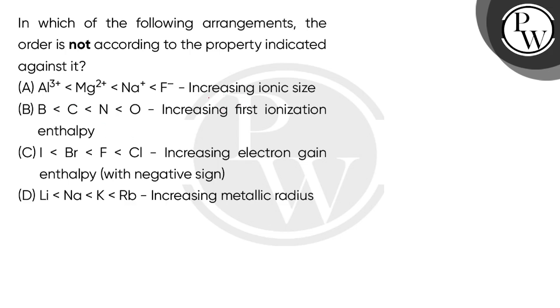So let's take the first increasing ionic size. If you look at this option, we have 4 species: Al3+, Mg2+, Na+, and F-. I know their atomic numbers - aluminum is 13, magnesium is 12, sodium is 11, fluorine is 9. Now if I look at the electrons, there are also 10 electrons in all of them. So these are isoelectronic species.